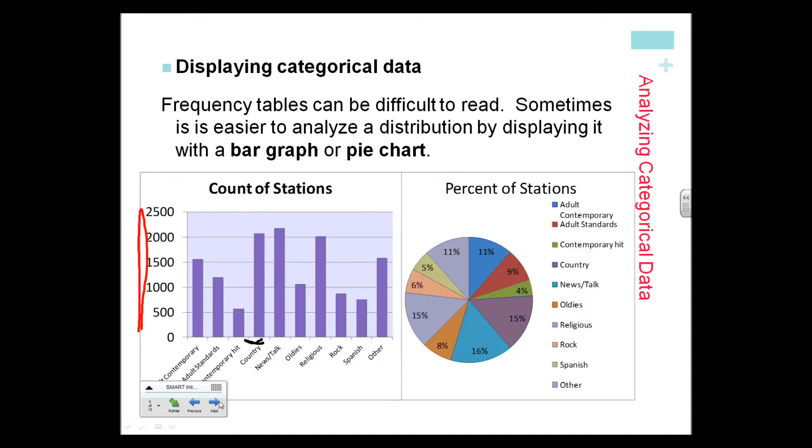Notice on bar graphs, very important: the bars are not touching. Categorical data must be displayed in one of these two ways—a bar graph or a pie chart. Since we won't do pie charts regularly, we will be using the bar graphs.